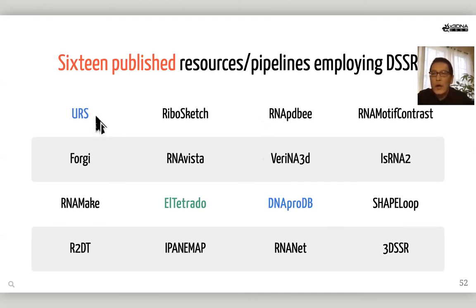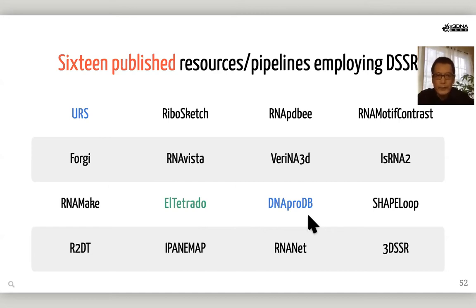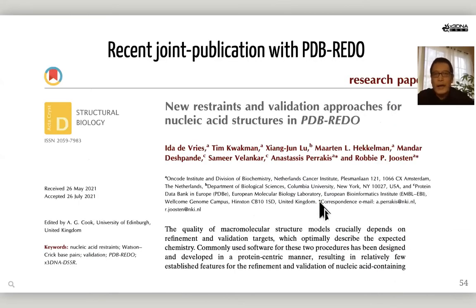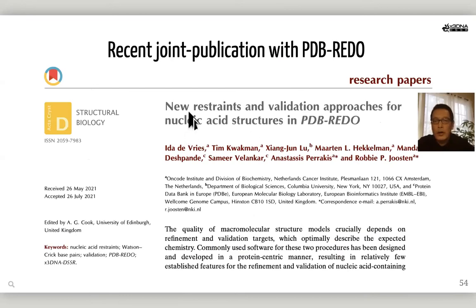This work was done with Thomas Holder, the principal PyMOL developer. Thomas wrote the DSSR PyMOL plugin so users can generate schematics interactively within PyMOL. In addition to DSSR-GEMO and DSSR-PyMOL integration, DSSR has also been used by many other bioinformatics resources. Here is a list of 16 published ones covering a broad range of topics in structural bioinformatics. For example, URSUS stands for Universe of RNA Structures; G4 covers G-quadruplexes; DNA ProDB is the DNA Protein Database. PDB Redo also makes use of DSSR.